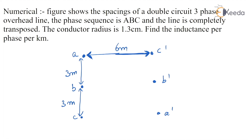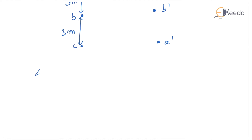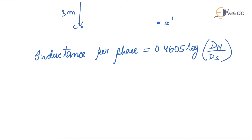The conductor radius is 1.3 cm. Find the inductance per phase per kilometre. We know the formula for inductance per phase per kilometre: inductance per phase equals 0.4605 log(Dm / Ds) mH per kilometre. Now we have to calculate Dm — the mutual GMD — and Ds — the self GMD.